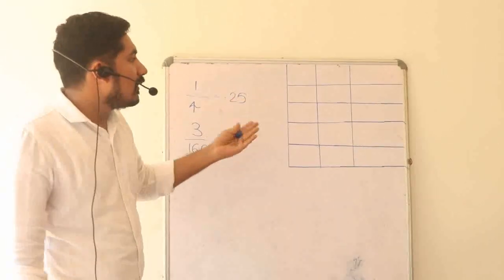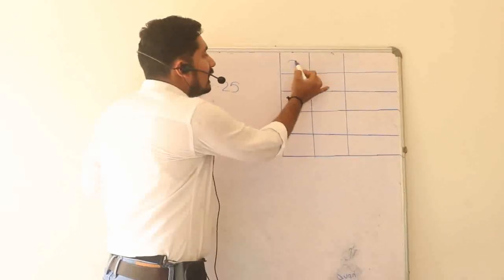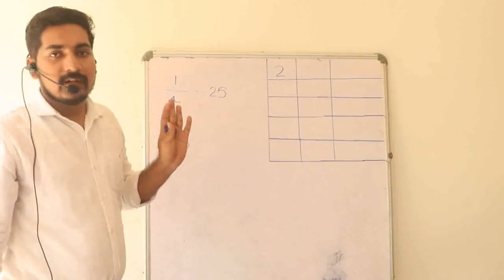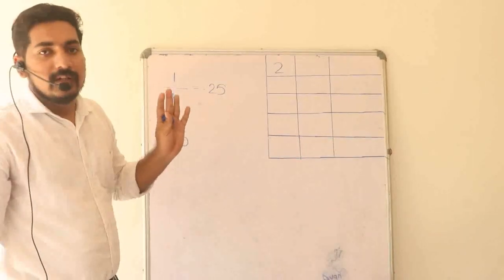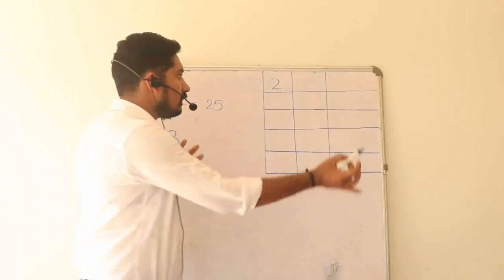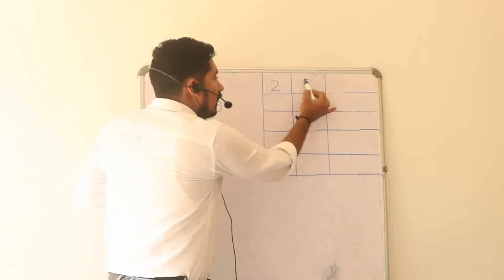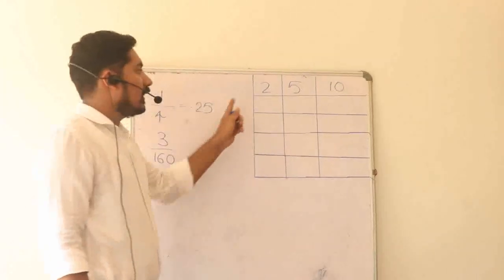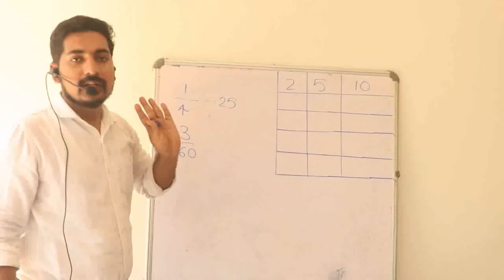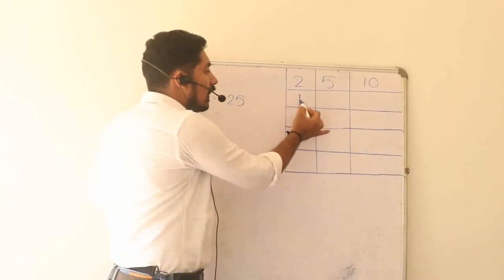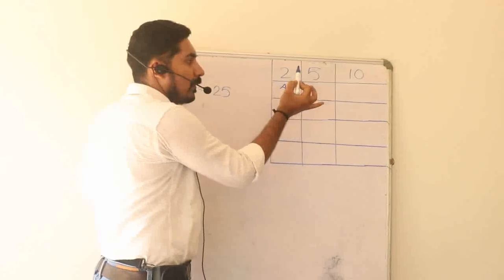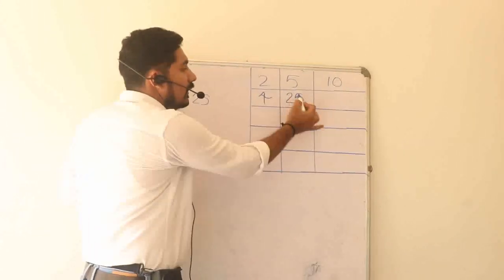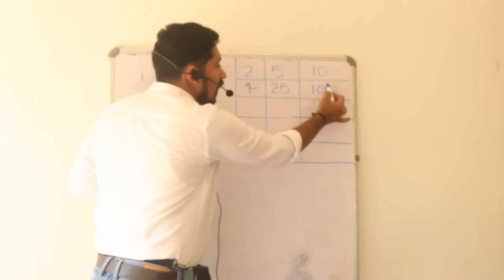This is the table. This is the basis of 2. This is the question. I have 2 here, and here is 5. 2 is equal to 10. 2 is equal to 4. 5 is equal to 25. 4 is equal to 25. Is this clear?